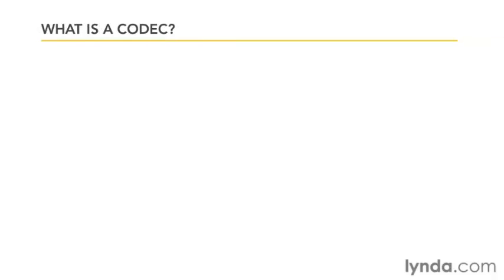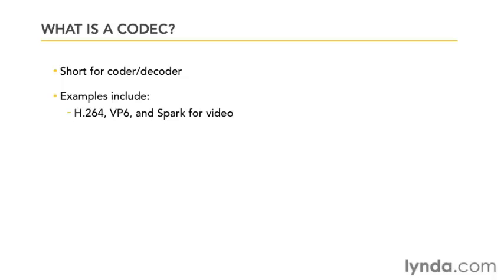What is a codec? Codec is short for Coder-Decoder and refers to the process of taking raw data and compressing it. The formula the encoder uses to compress the data is referred to as the codec. For example, Flash uses H.264, VP6, and Sorenson Spark for video, and AAC, Speex, and MP3, and also Nelly Moser for audio.